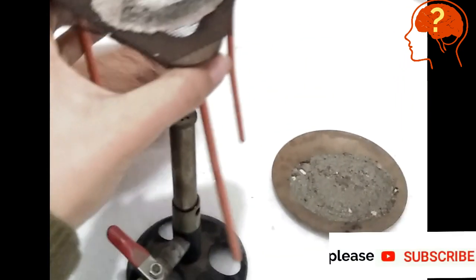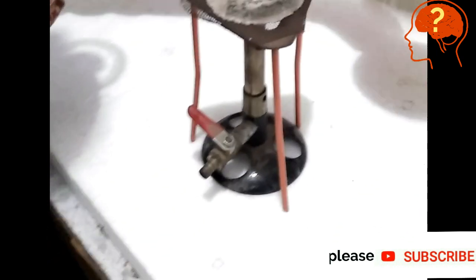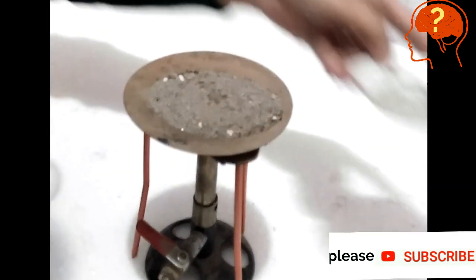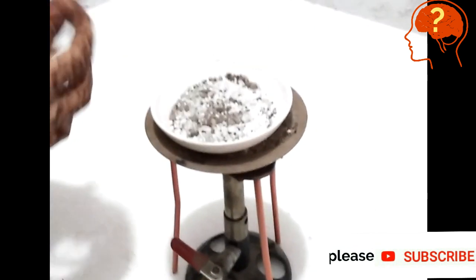Now set the apparatus, place the bunsen burner, then tripod stand, then sand bath, then china dish having mixture.